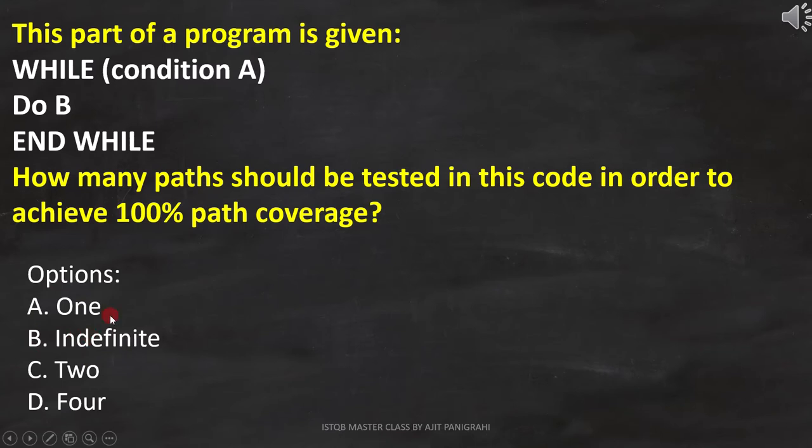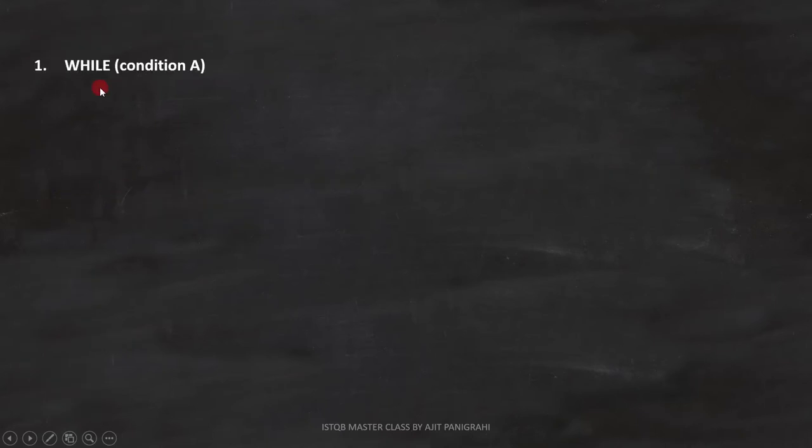Let's first analyze the code and draw the flowchart. Line 1 is while condition, while condition A. For finding statement coverage or branch coverage, we can use while loop as a normal condition in the flowchart, like this.